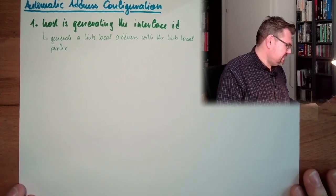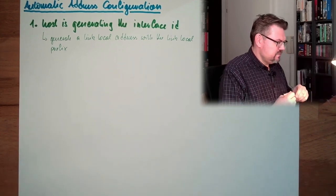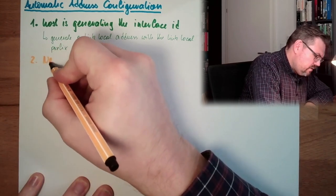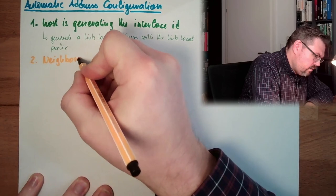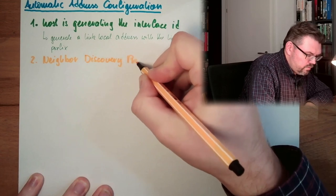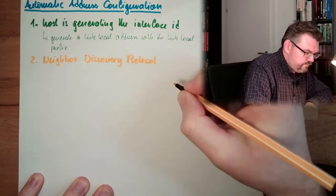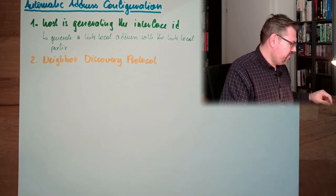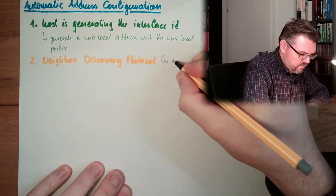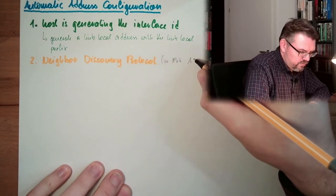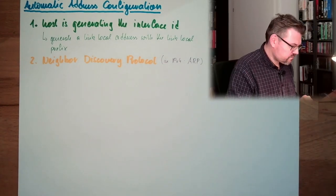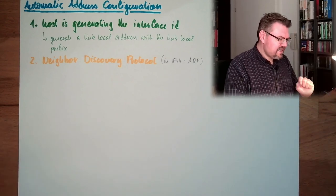And then second thing is the so-called neighbor discovery protocol. In IP, in IP version 4, this was called ARP, address resolution protocol. This is pretty much the counterpart. Neighbor discovery protocol.